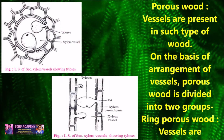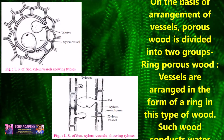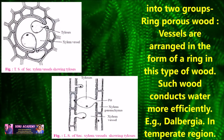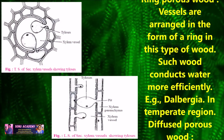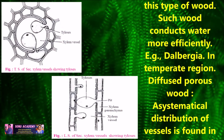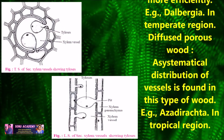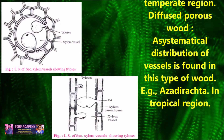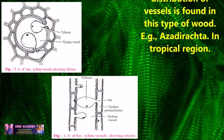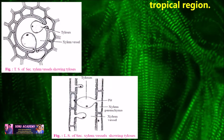Ring porous wood: vessels are arranged in the form of a ring in this type of wood. Such wood conducts water more efficiently. Example: Dalbergia in temperate region. Diffused porous wood: a systematic distribution of vessels is found throughout the wood. Example: Azadirachta indica in tropical region.